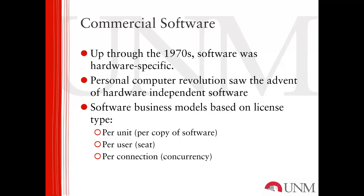In the 1950s, software was designed specifically for a particular hardware configuration. You actually bought the computer hardware, and then the software was something designed to operate specifically with that particular hardware configuration. This remained the case up through the 1970s, when software remained hardware-specific, even up through the creation of the first desktop-type computers. However, the personal computer revolution saw the advent of hardware that was independent of software, or vice versa — the software became portable. You could buy a certain class of hardware, with a lot of variation between the different components, but you could still run the same software on it.